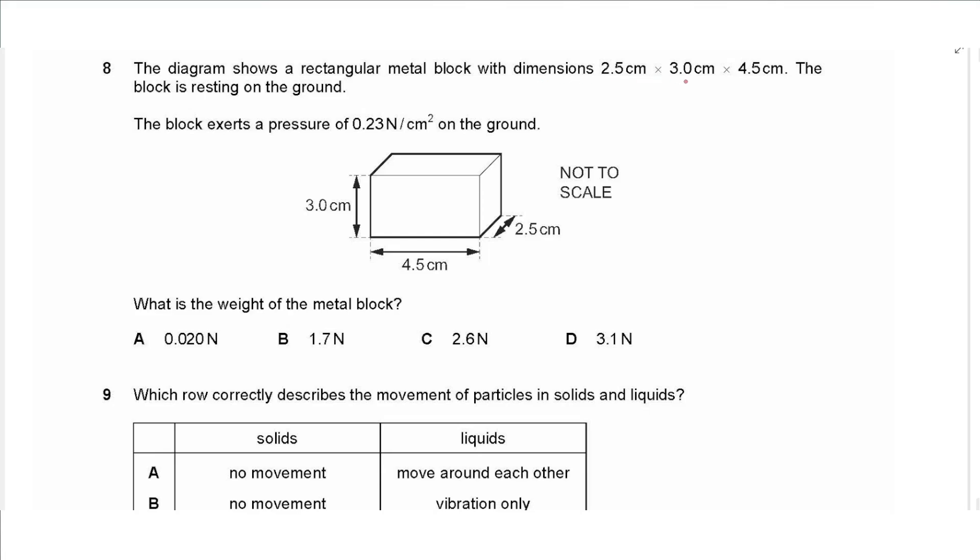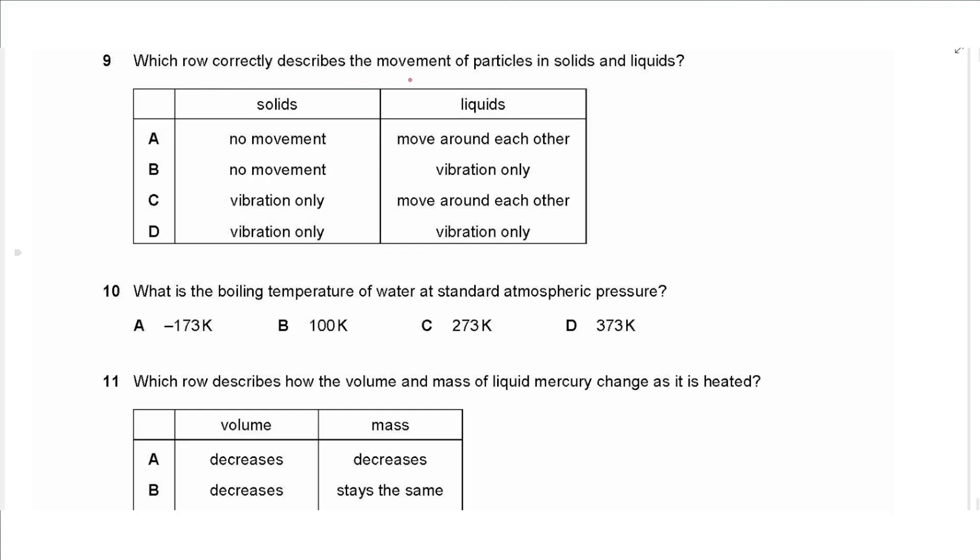Question eight says the diagram shows a rectangular metal block with dimensions 2.5 centimeters by 3 centimeters by 4.5 centimeters. The block is resting on the ground. The block exerts a pressure of 0.23 newtons per centimeter, so that's force divided by area, on the ground. What is the weight of the metal block? So the force is equal to the weight. If pressure is equal to weight divided by area, weight is equal to pressure multiplied by area. So the pressure is 0.23 and the area which the weight acts on is the base area, which is 4.5 by 2.5. So we multiply this by 4.5 and 2.5, we get an answer of 2.5875 which we can approximate to 2.6, so we choose C.